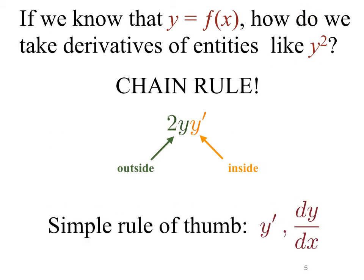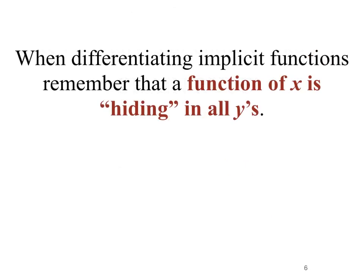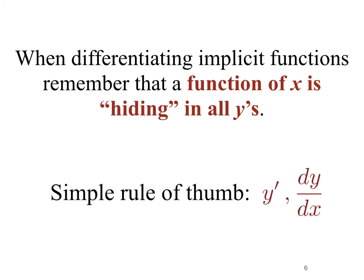A simple rule of thumb when taking derivatives of implicit functions like y squared is to always remember that you'll get a y prime or dy/dx term if you're using the Leibniz notation. When differentiating implicit functions, just remember that a function of x is hiding in all of the y's. If you do that, you'll remember to apply the chain rule and always include a y prime term.